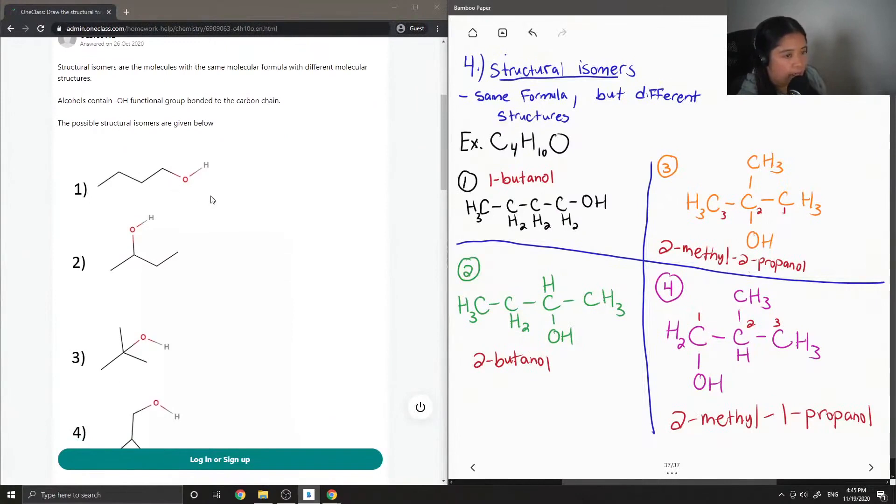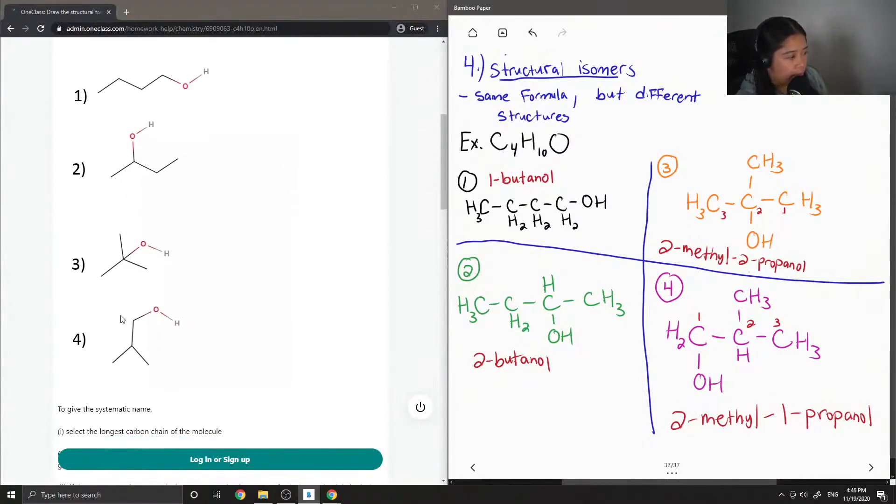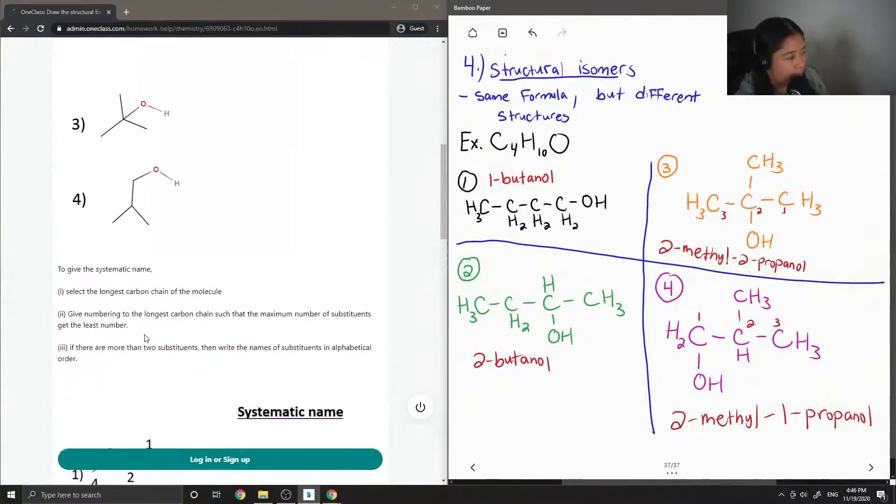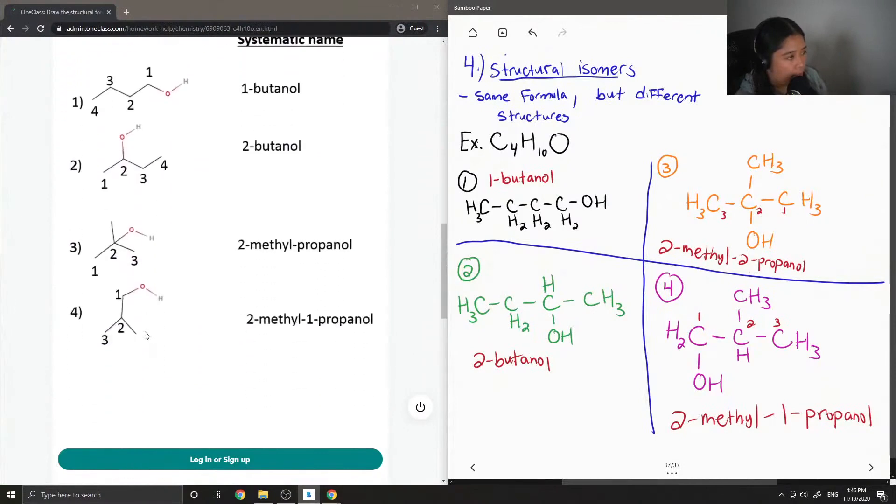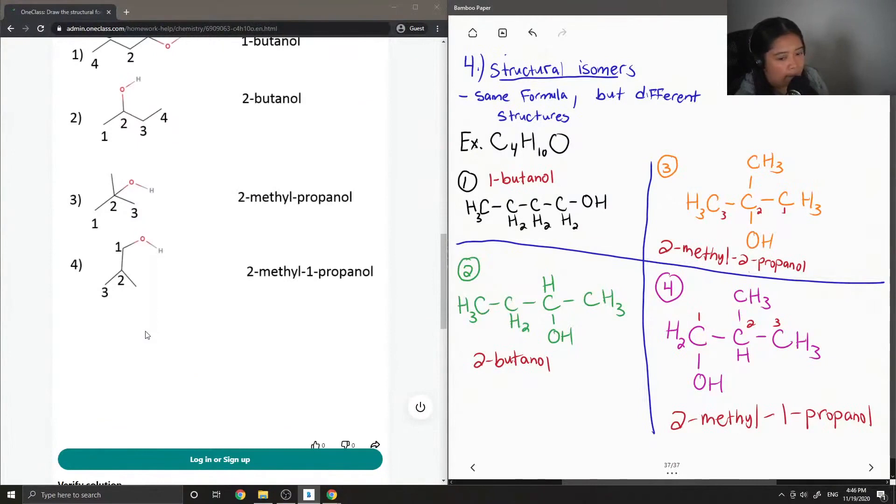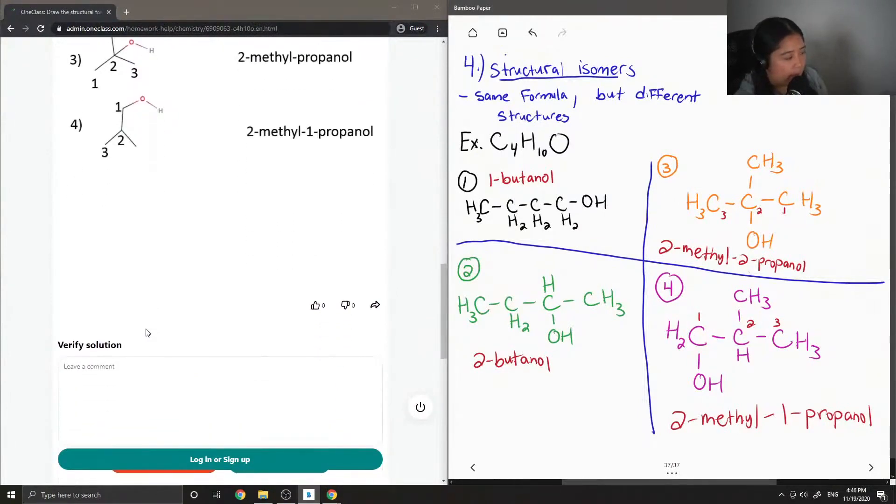They have the alcohol group at the end, alcohol group in the middle, and then they have the alcohol group on the second carbon kind of in the middle here, and then they have it over there. They also named their compounds and got the same answers.